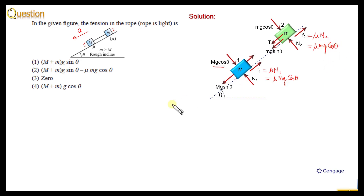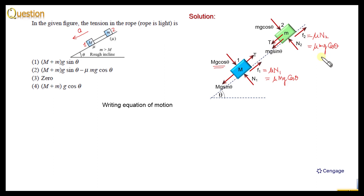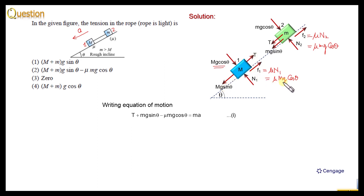Now we can write the equations of motion. For block number two, the equation of motion is: T + mg sinθ − μmg cosθ = ma. This is equation number one. Similarly, we can write the equation of motion for block number one: Mg sinθ − T − μMg cosθ = Ma.